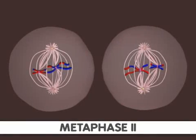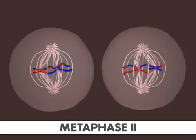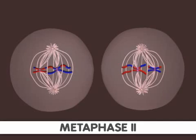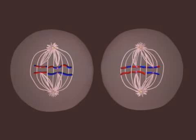In metaphase II, the chromosomes align at the equator of the cell. Again, the alignment is random. Since the sister chromatids are no longer identical, there will be many different possible ways for these chromosomes to align.